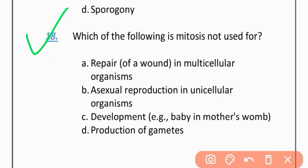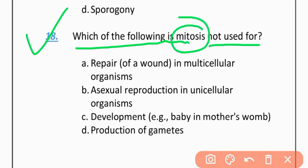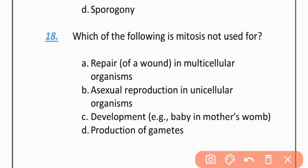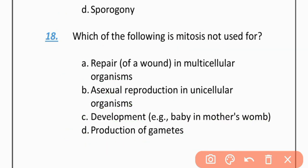MCQ 18: Which of the following statements is NOT used for mitosis? Option A: Repair of wounds in multicellular organisms. Option B: Asexual reproduction in unicellular organisms. Option C: Development of baby from mother. Option D: Production of gametes. The correct option is D — Production of gametes.